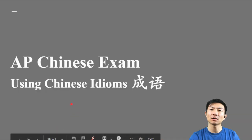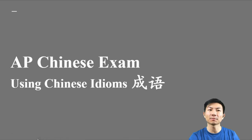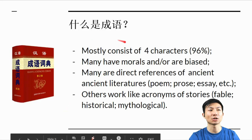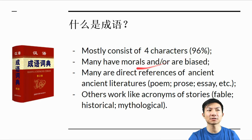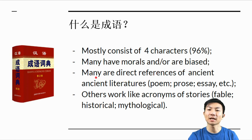The main topic of today's video is using Chinese 成语 in your culture presentation. First of all, we're going to be talking about what is 成语? 成语 mostly consists of four characters, and many of them have a moral in them or they have a biased meaning — they're either used to describe something good or something bad. So that is something you should be careful about when you're using 成语.